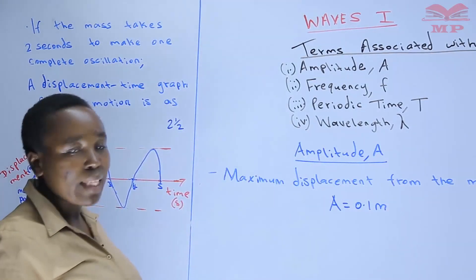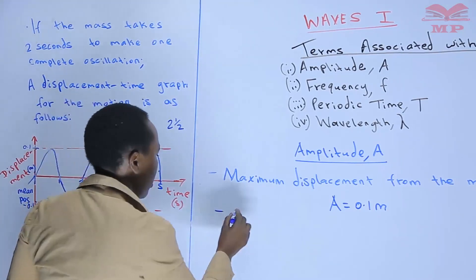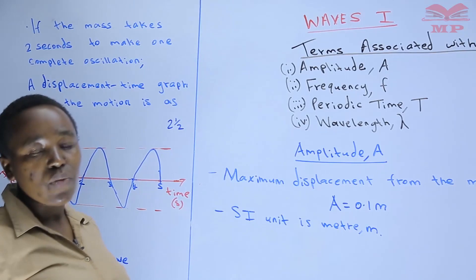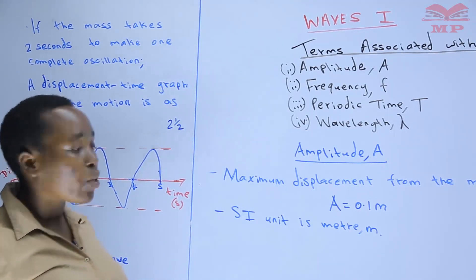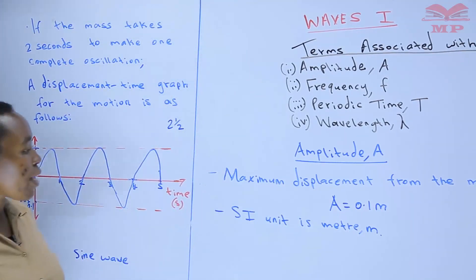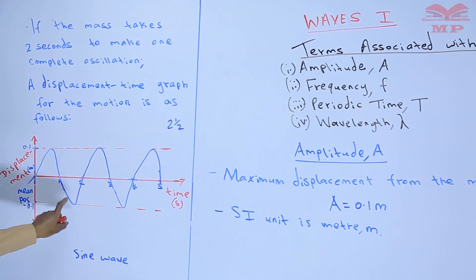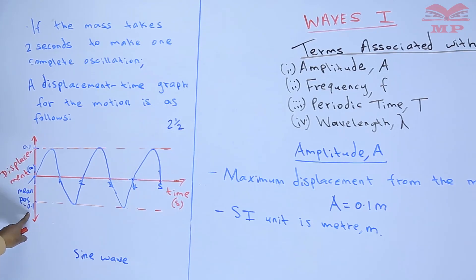The SI unit of amplitude is meters. Being a displacement, and the SI unit for displacement is meters, the SI unit of amplitude is meters. If you are given a wave and asked for the amplitude, you check the highest point — you look at the crest or even the trough — and take the distance from the mean position. So the amplitude is 0.1 meters. If given in centimeters, convert to meters for the SI unit.